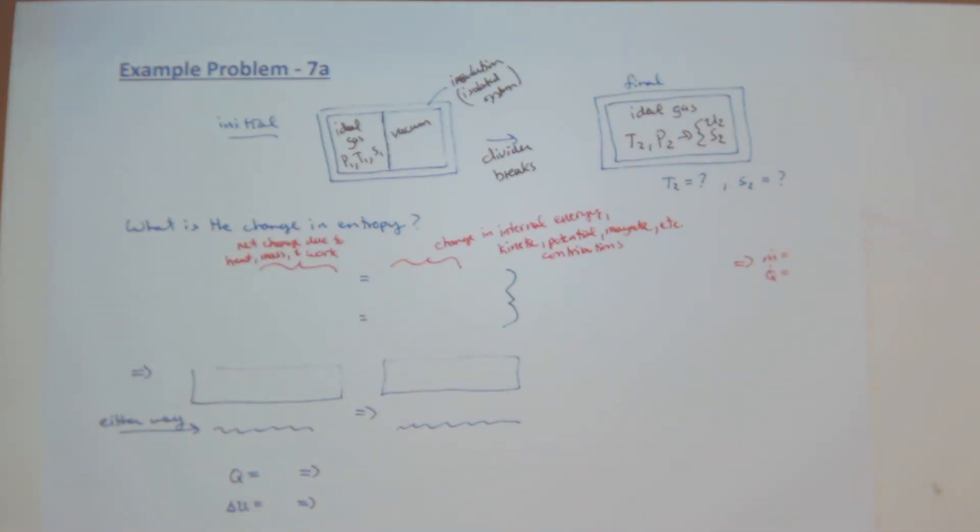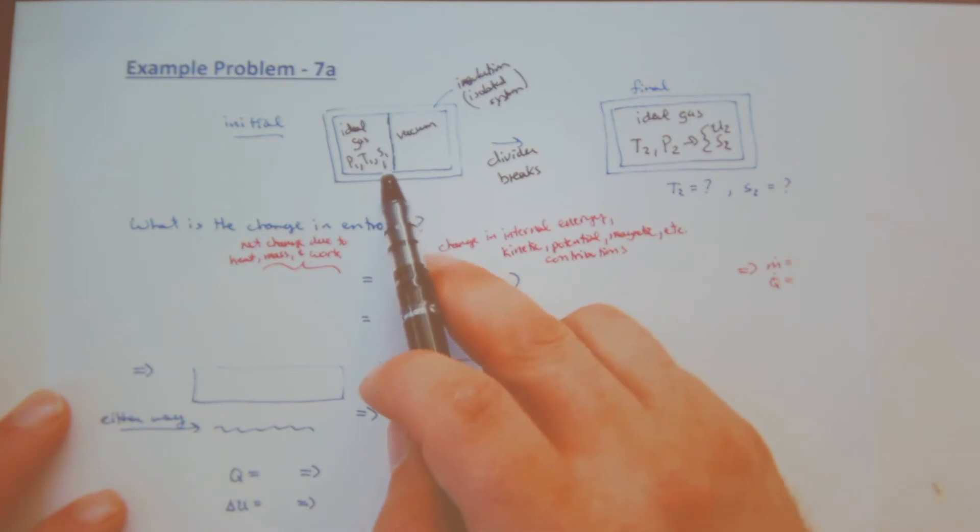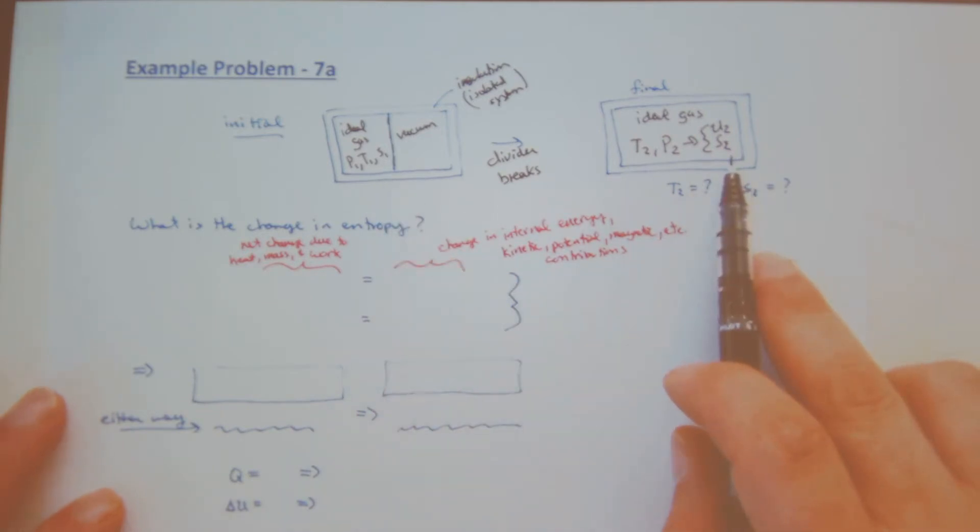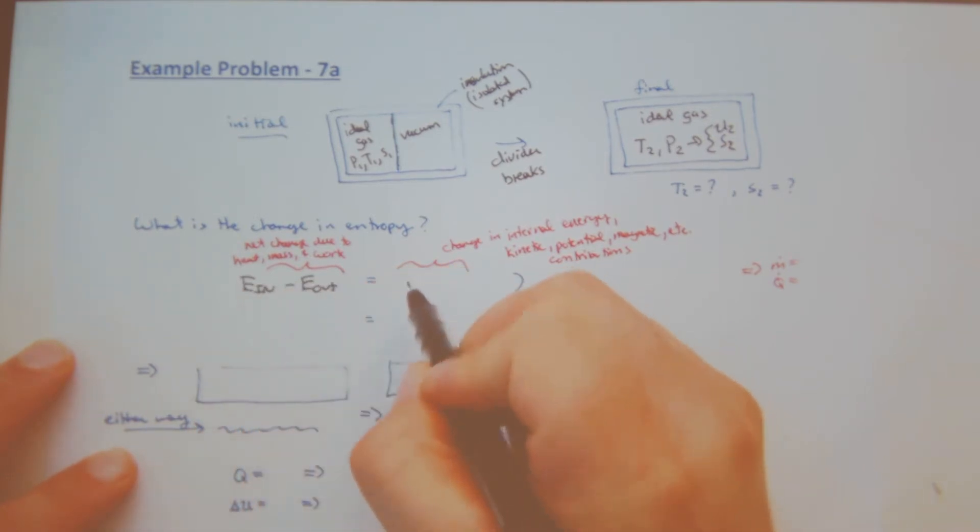The question is, what is the change in entropy from going from my initial state S1 to my final state S2? So what is the change in entropy? I can start off doing an entropy balance. I would recommend that even if I ask you to solve for the final entropy or the change in entropy, that before you even go to entropy balance, you do an energy balance.